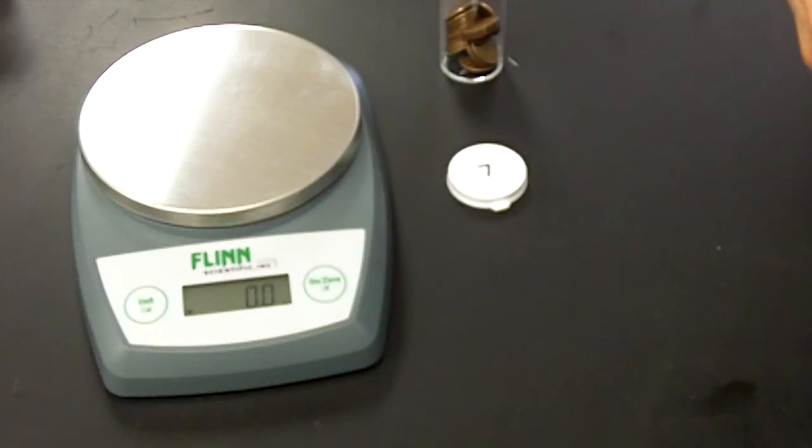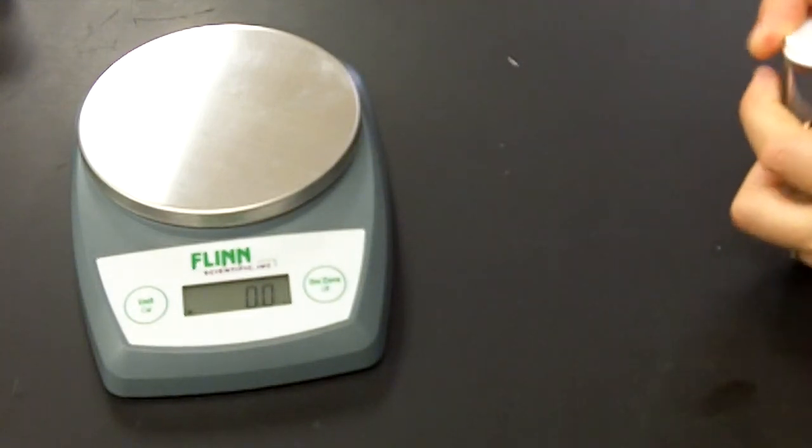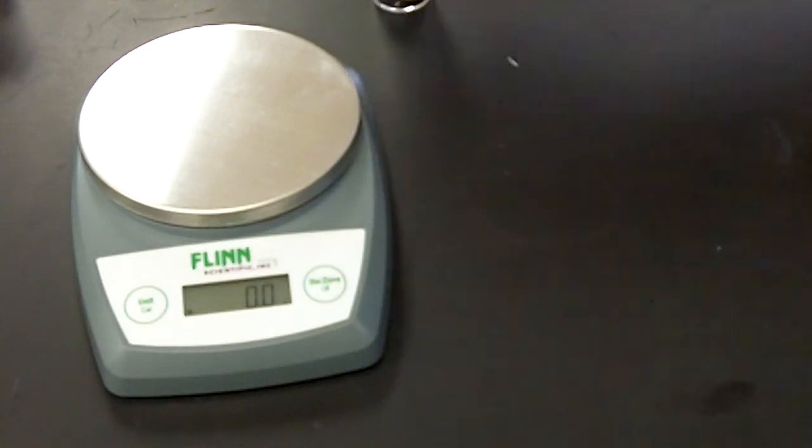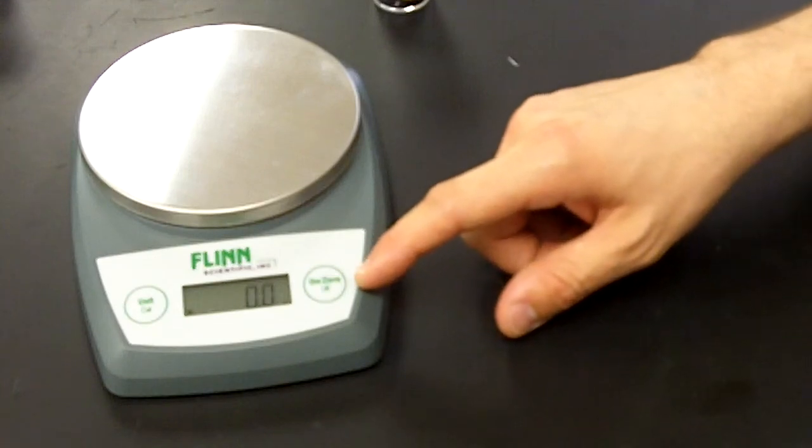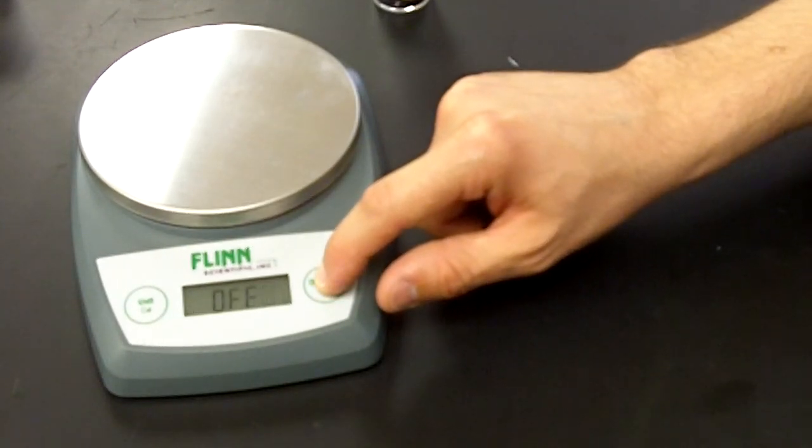Step number five: Replace the pennies into the container. That's been done. Step six: Clean and organize the lab station. Turn off balance. Step seven: Wash hands with soap and water, as I will be sure to do. That concludes the Unit 2 Isotopes of Pentium Lab.